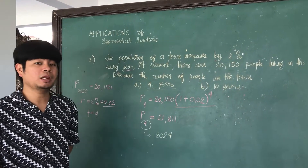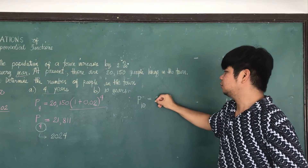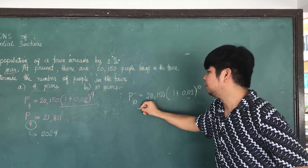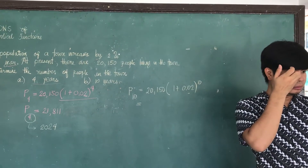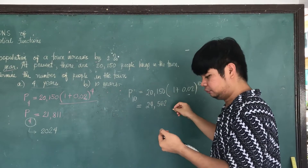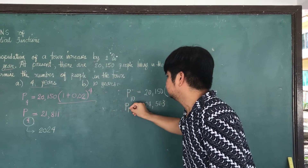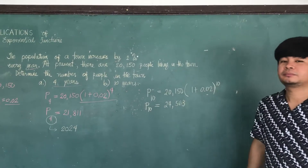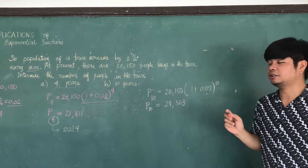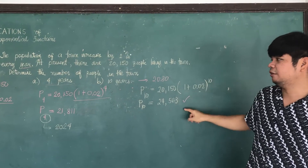For after 10 years: P of 10 equals 20,150 times (1 plus 0.02) raised to 10. The population is 24,563 people living in that town after 10 years — that would be on year 2030. You expect this number as a prediction.